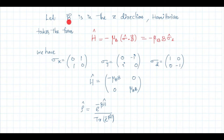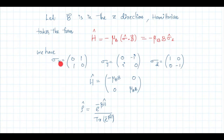Consider the magnetic field to be in the z direction. Then the Hamiltonian takes the form H = -μ_B σ·B. Since B is in the z direction, the Pauli spin operator has three components: σ_x = [[0,1],[1,0]], σ_y = [[0,-i],[i,0]], σ_z = [[1,0],[0,-1]]. The only Pauli spin matrix which is diagonal is σ_z.